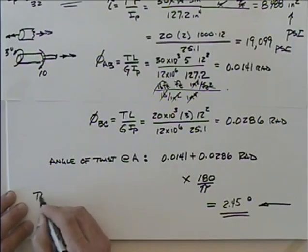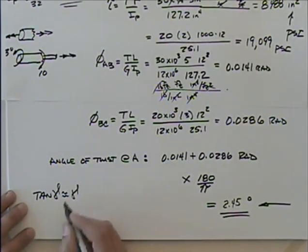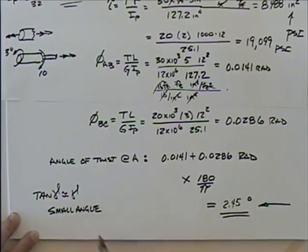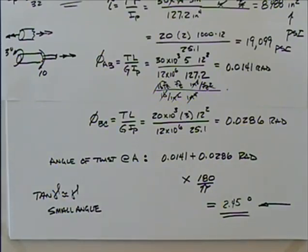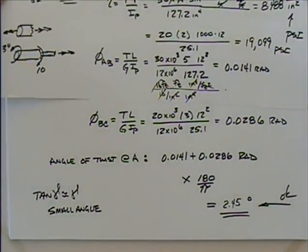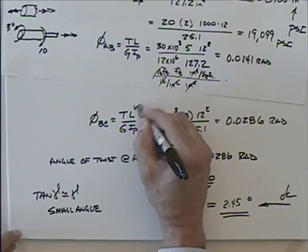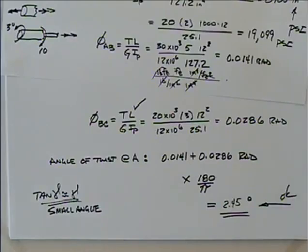Remember that the tangent of gamma is approximately equal to gamma for small angles — the requirement was that it be a small angle. Is 2.45 degrees a small angle? Yes — anything less than about 5 or even 10 degrees we consider small, so we're okay. When we get together next time, we'll talk about how we can use these equations to help us with statically indeterminate problems, very much like we did in the axial case.